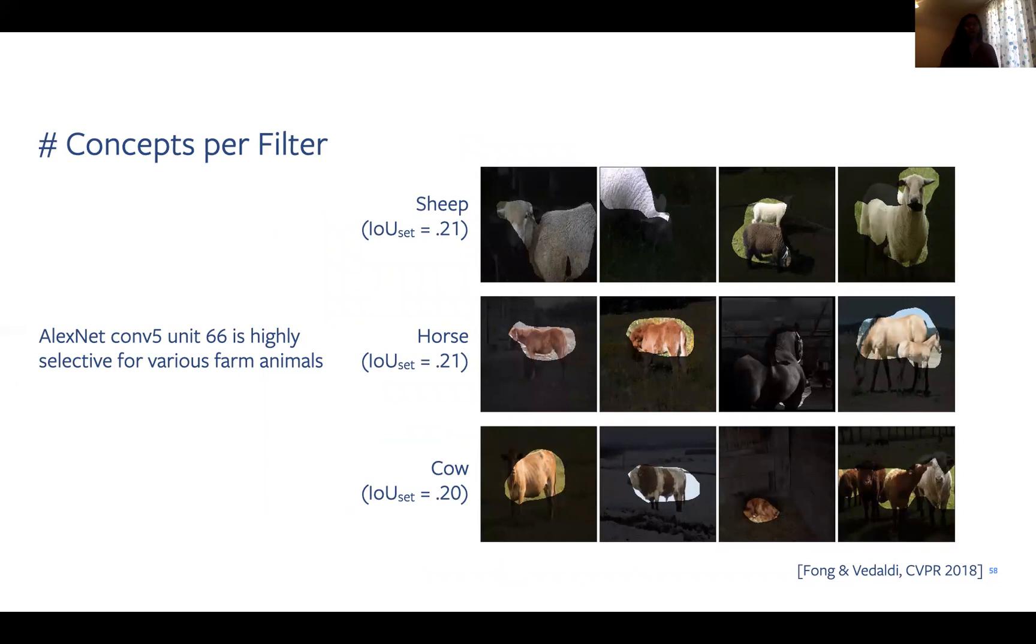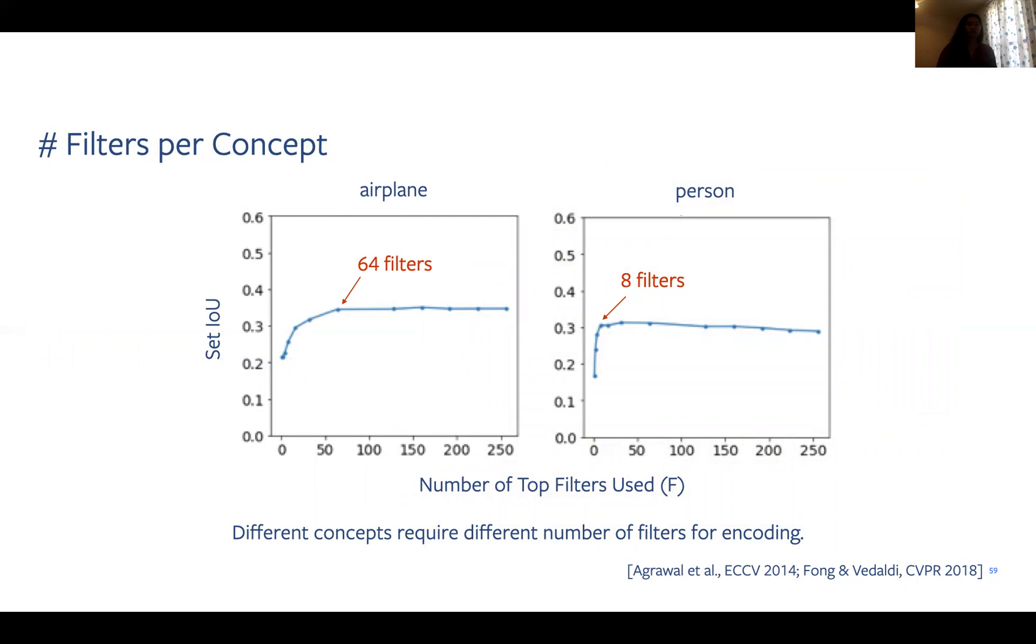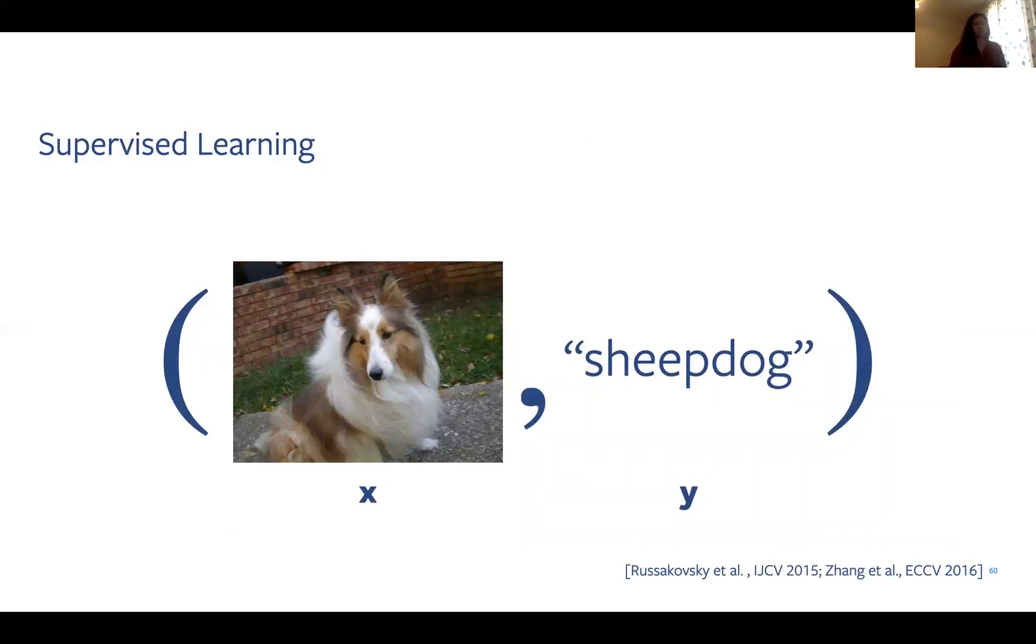Now for a few quick results. We first discover that multiple concepts can be packed into a single filter. In this example, this COM5 unit is highly selective for different kinds of animals. This visualization also highlights the limitations of our annotated labels, where perhaps this unit is truly selective for the unlabeled concept, farm animal. Second, we demonstrate how our paradigm allows us to quantify how many filters are needed to encode a single concept. We try using a different number of filters for a given task. Here, we see that performance saturates when using 64 filters for airplane and 8 filters for a person. This suggests that the airplane concept is encoded in a more distributed way. This was also done in prior work.